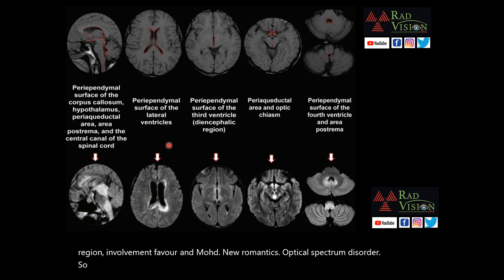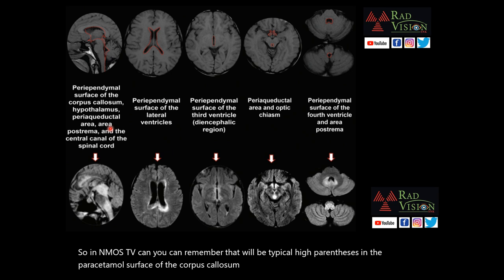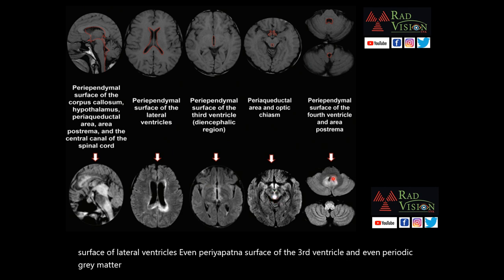In NMOSD, there will be typical hyperintensities in the periependymal surface of the corpus callosum, hypothalamus, periaqueductal gray area, periventricular surface of the lateral ventricles, periependymal surface of the third ventricle, and the periependymal surface of the fourth ventricle — and this is the area of the postrema.